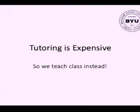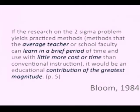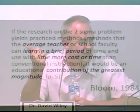Now, tutoring is very expensive. It's already hard, particularly right now in the current budget climate, to hire enough teachers to teach classes of 30 or 40 or 500. Imagine trying to pay for one teacher for every student — very, very expensive. So we teach class instead. In this paper by Bloom, he said: so they've demonstrated this two sigma effect. If the research on this two sigma problem could yield practiced methods — methods that the average teacher can use, that they can learn in a very brief period of time and that don't cost more money or time than what they used to do — that would be an educational contribution of the greatest magnitude. If we could increase student learning so much with an average teacher with very little difference in cost.